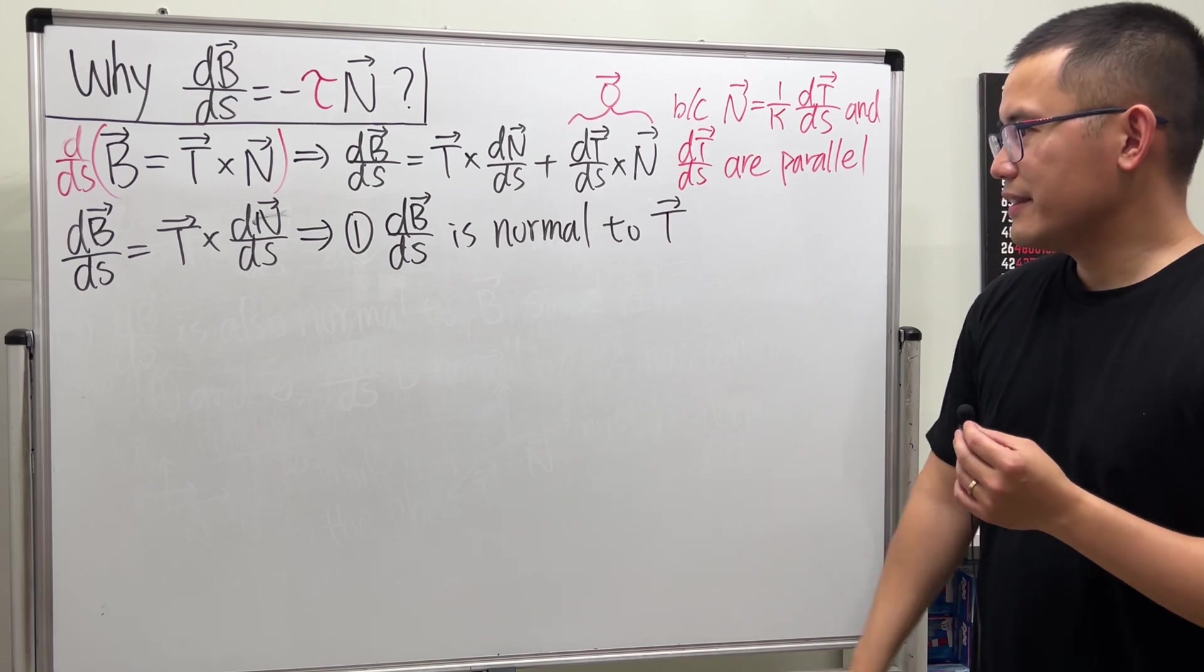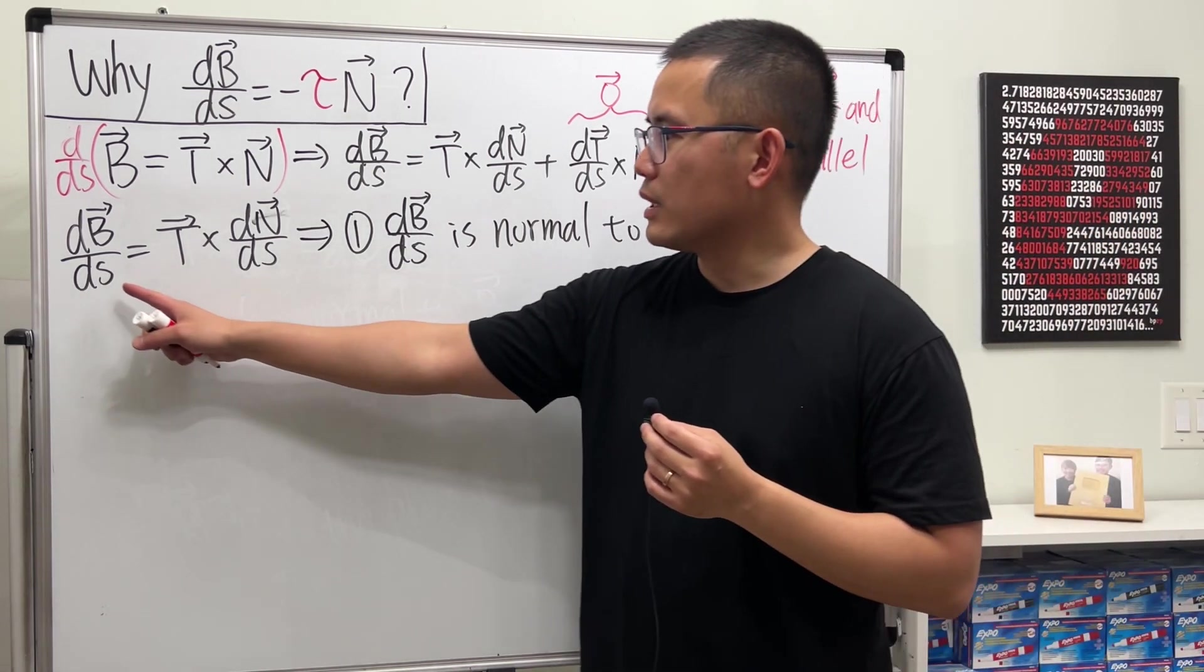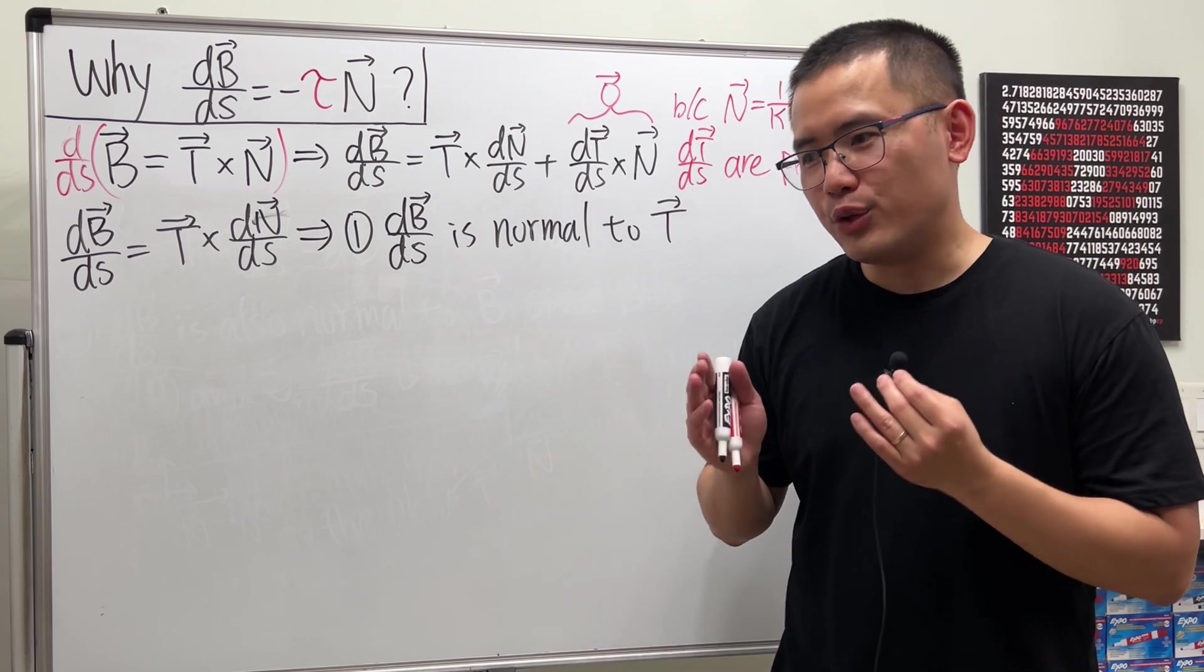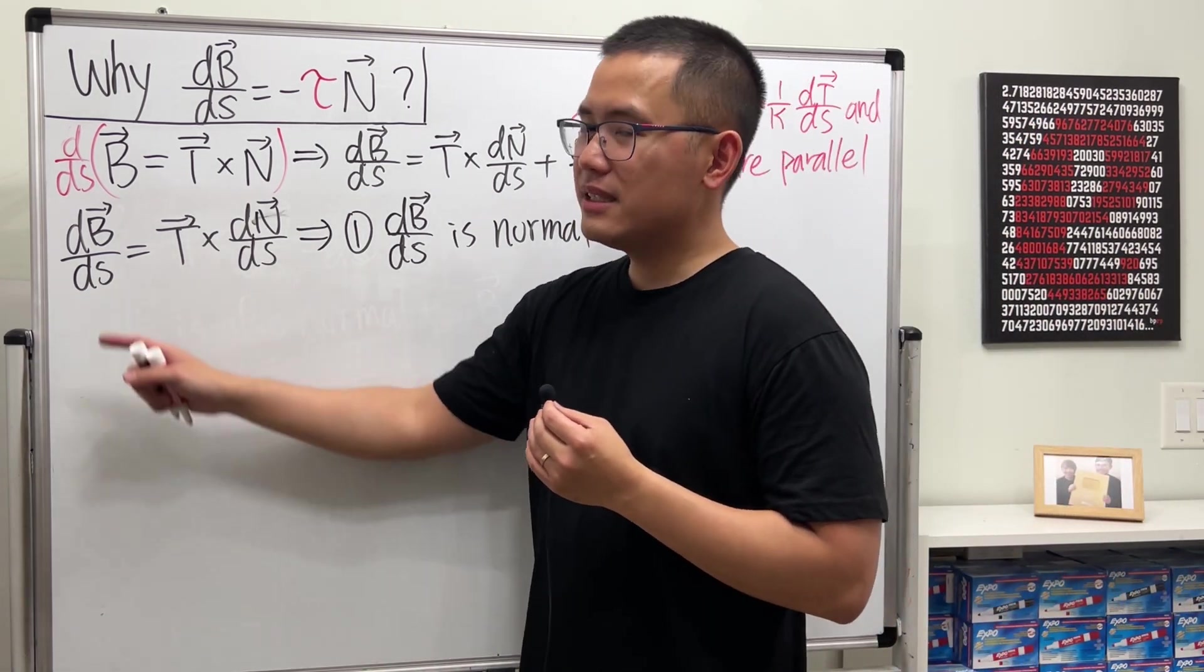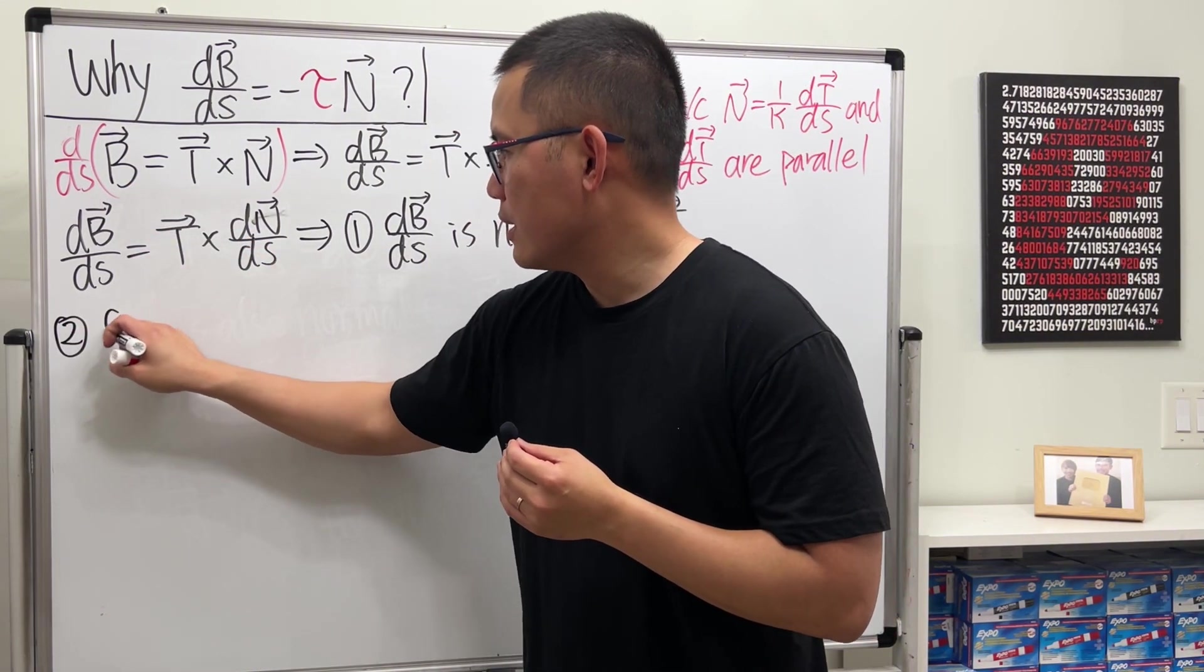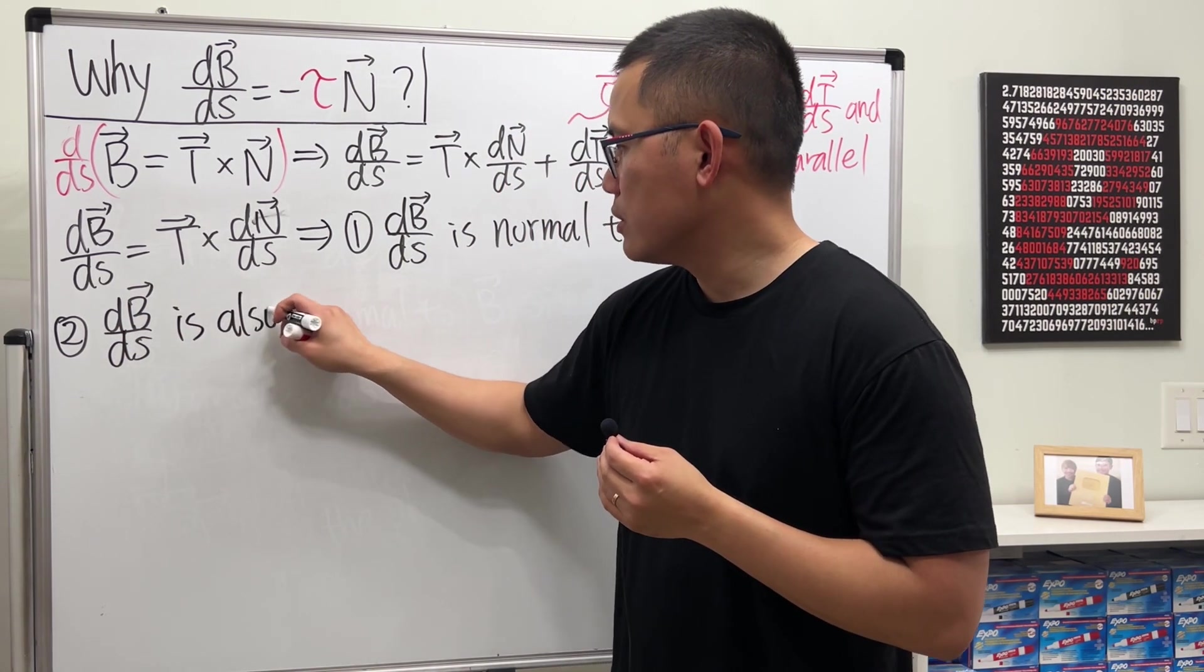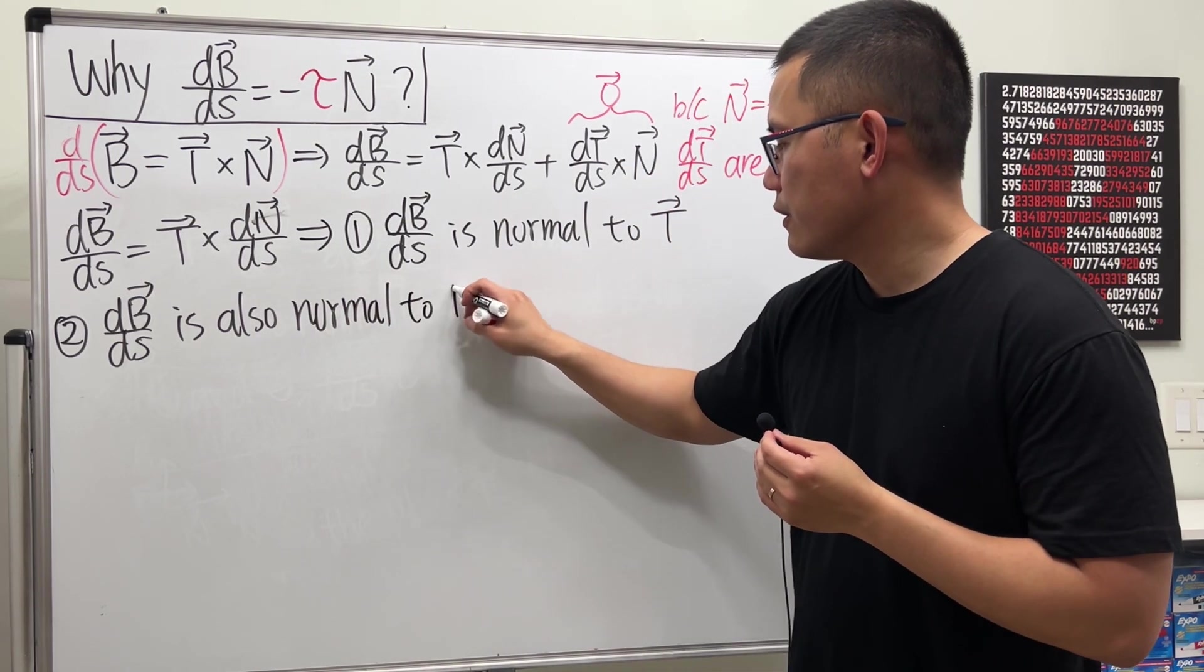Okay, so that's good. Now, what else can we say about dB/ds? Well, this right here is the derivative of B. And B is what? The unit binormal vector. And because it's a unit vector, so it has constant length. Therefore, we can say dB/ds is also normal to B. And that's the second thing that we need. dB/ds is also normal to B.